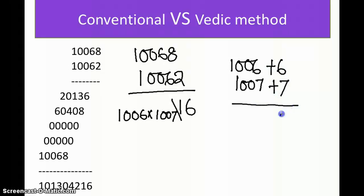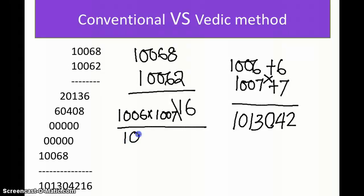Since the base is 1000, we need three digits on the right side: 6 × 7 = 42, so we place 042. On the left side, 1006 + 7 (or 1007 + 6) = 1013. So 1006 × 1007 = 1013042. Substituting back, the full answer for 10068 × 10062 is 1,013,042,16 — that is 10130 4216.